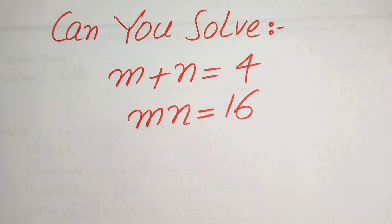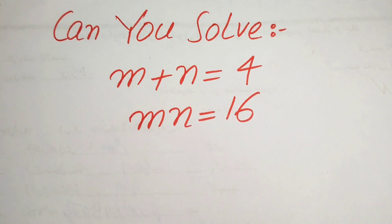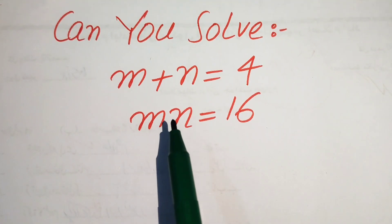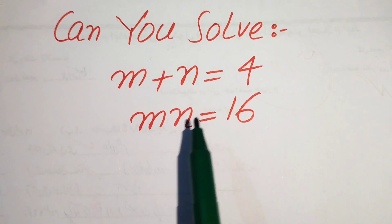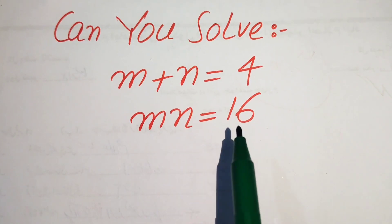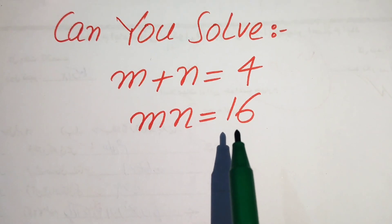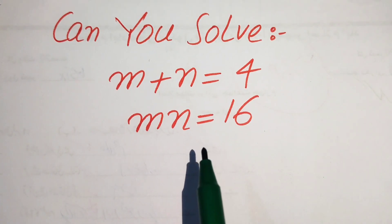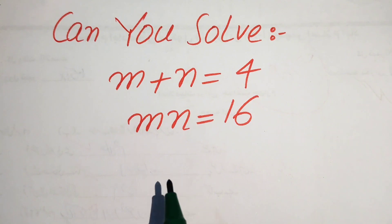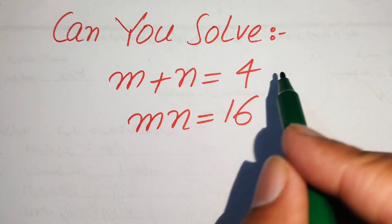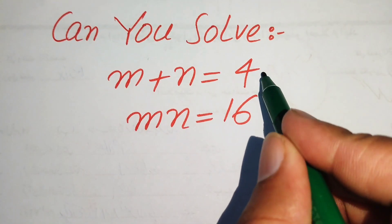Hello everyone, welcome. We will solve this algebra problem. We have m plus n equals 4, and m times n equals 16. We will solve this problem for the values of m and n.